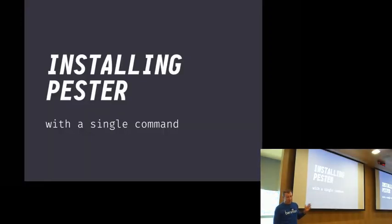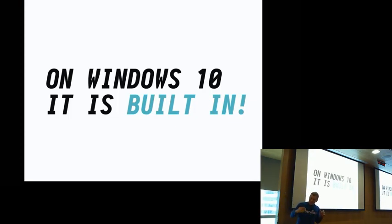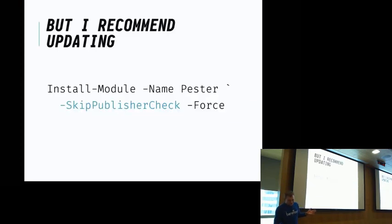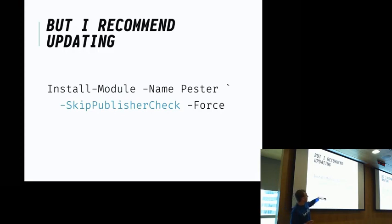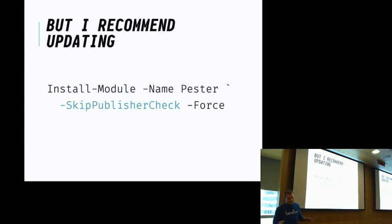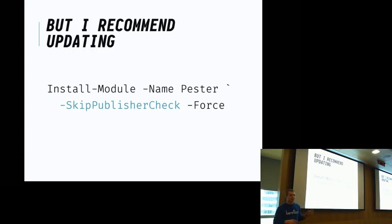So how do you install Pester? Well, you don't have to, because on Windows 10 you already have it built in — it's one of the open source softwares that ship with Windows 10. We have about 700 million installations, but nobody uses them. So it's better if you update. You do Install-Module, which connects you directly to PowerShell Gallery. Since Pester is shipped with Windows, you also have to skip the publisher check and use Force — otherwise it tells you you're trying to install something you already have that was signed before. I'm working to get Pester signed, but I don't have that much time.